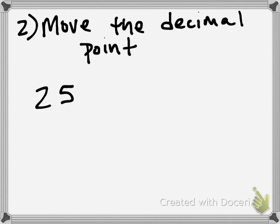The other option for moving from a percent to a decimal is to move the decimal point — and honestly, this method is easier once you understand it. The key is knowing that every whole number does have a decimal point; we just usually don't write it. Like the number 25, that's equivalent to 25 with a decimal point and a zero — meaning 25 and no tenths, 25 and zero tenths. So these are equivalent.